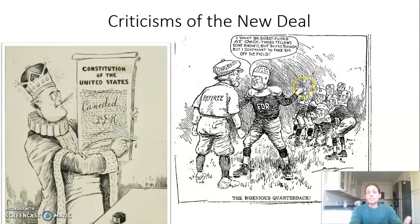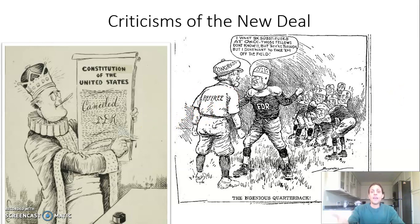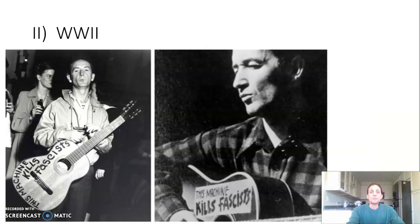FDR also gets criticized for specific actions, like the court-packing scandal shown in this cartoon, where he tries to load the court by adding six more justices — which Congress eventually rejects. The reason he wants to do that is because the Supreme Court is declaring a number of his New Deal programs unconstitutional. So he's going to receive criticism both during the time period and after.